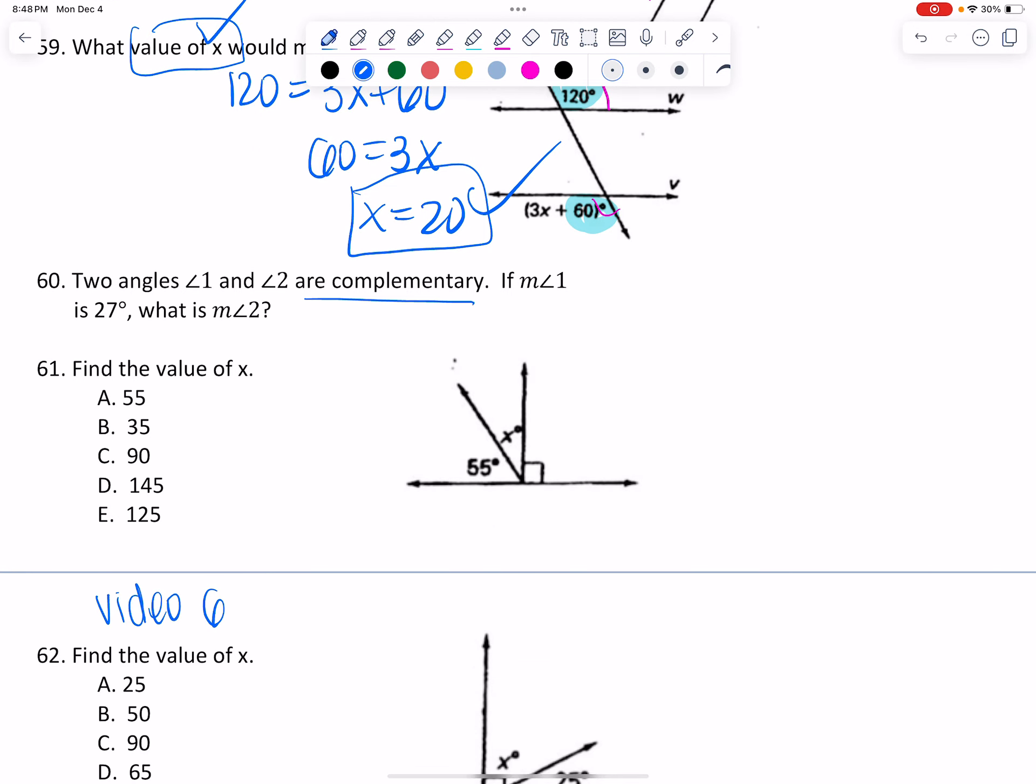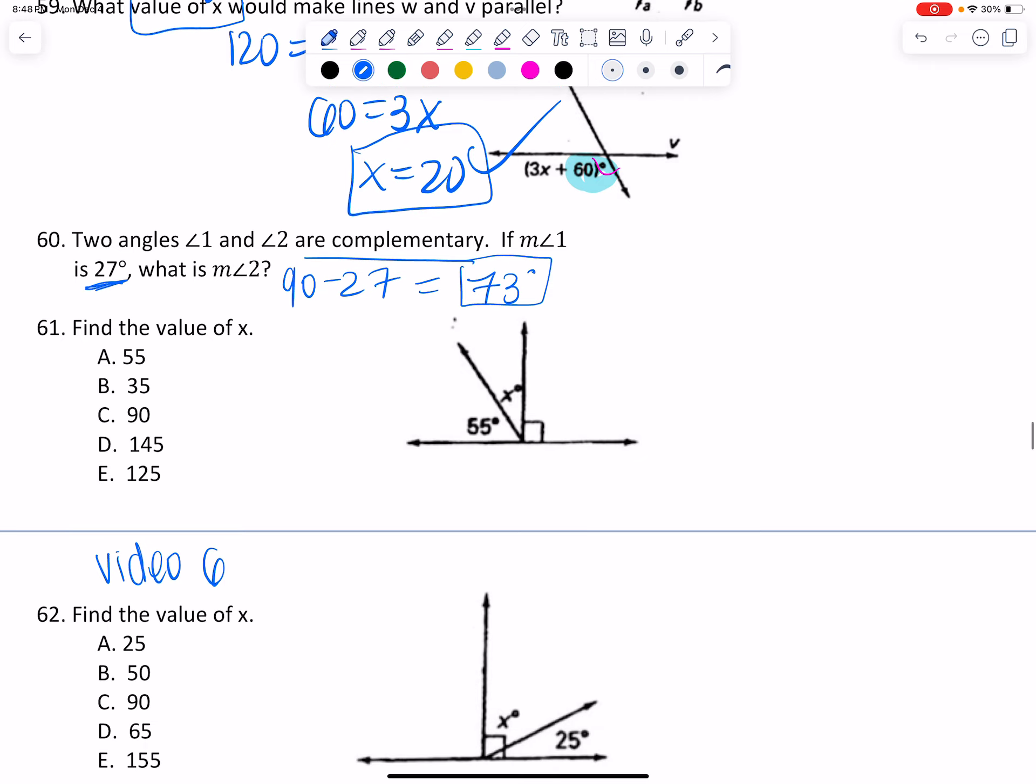Two angles are complementary. What is the complement of 27? You're going to go 90 minus 27. 90 minus 27 is equal to 73 degrees. So the complement of 27 is 73. And then find the value of X. We see that this is a 90 degree angle, which makes this whole thing a 90 degree angle. You could also say they all add up to 180. So 180 minus 90 minus 55 is going to give me 35 degrees remaining for angle X. And that does look like a 35 degree angle.